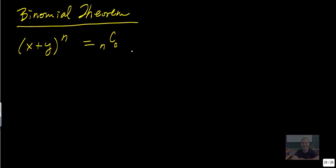n choose 0 is going to be your first kind of coefficient in there, times x to the n times y to the 0. So that's always your first term.